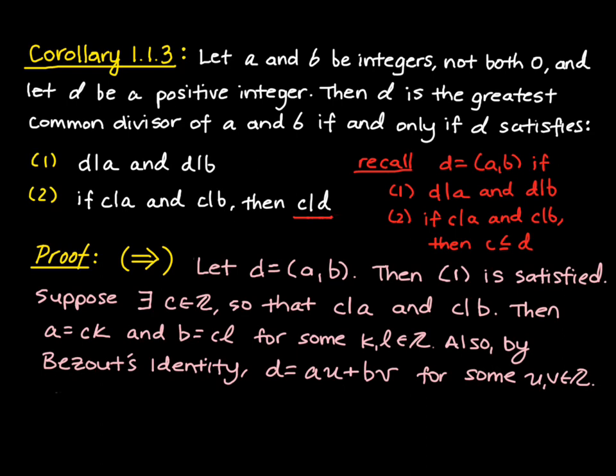So what do we have? We have that D is equal to AU plus BV. And so let's use some substitutions to see what else we can get. We know that A is going to be equal to C times K. So instead of writing A, I'll write CK times U. And then similarly, B is equal to C times L. So I'll write CL times V.